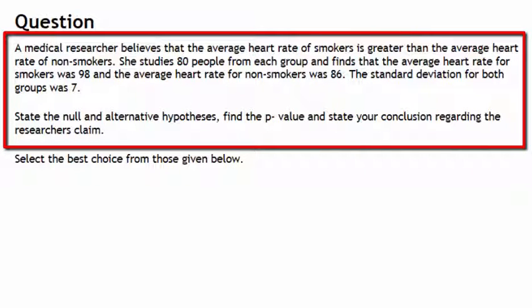A medical researcher believes that the average heart rate of smokers is greater than the average heart rate of nonsmokers. She studies 80 people from each group and finds that the average heart rate for smokers was 98 and the average heart rate for nonsmokers was 86. The standard deviation for both groups was 7.